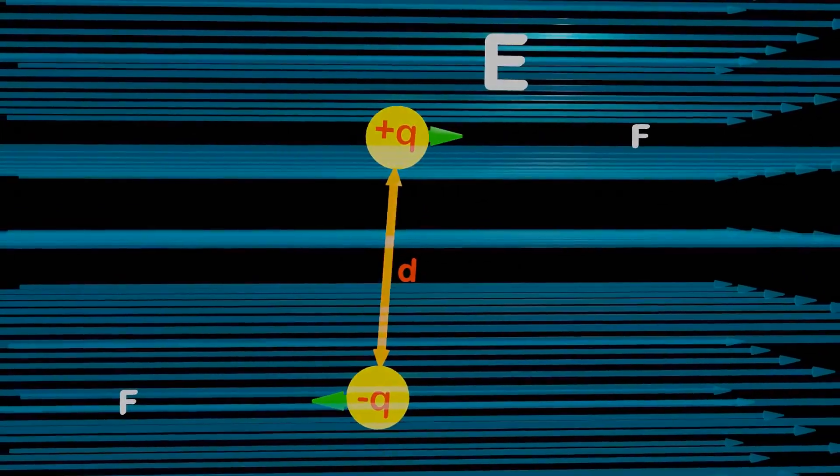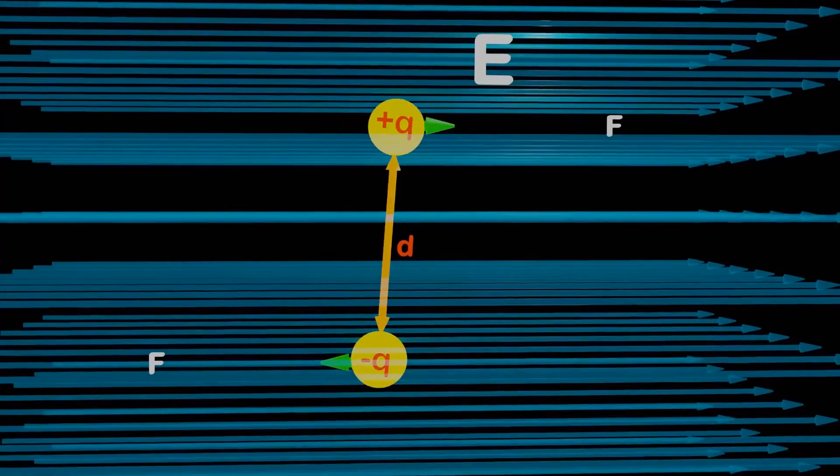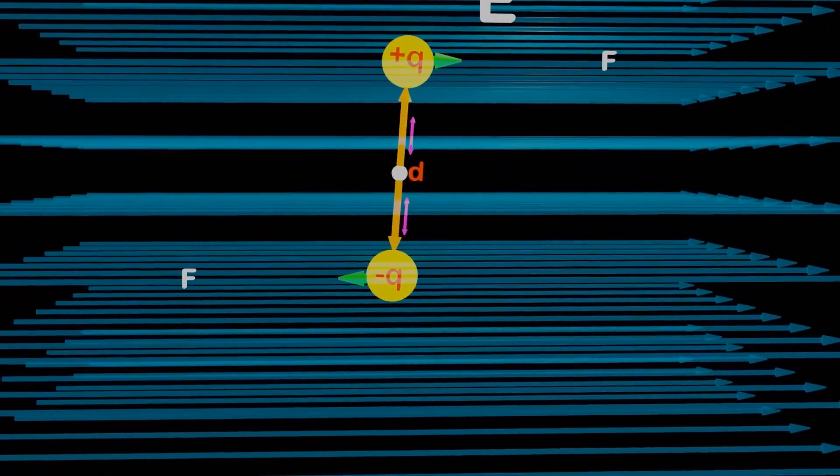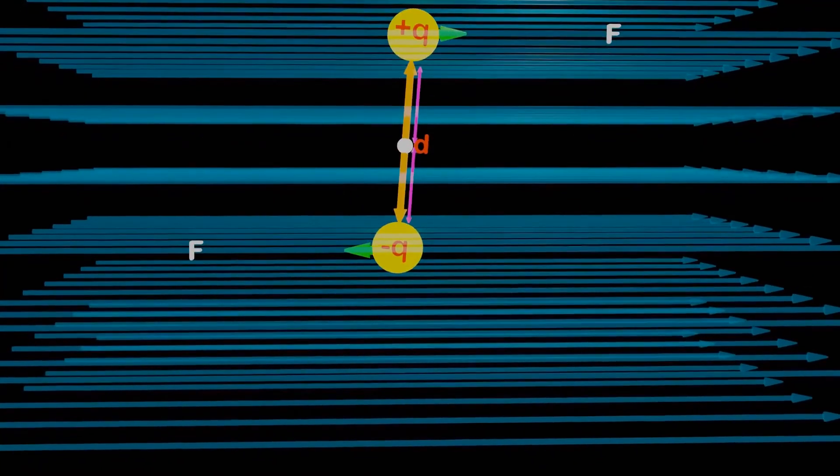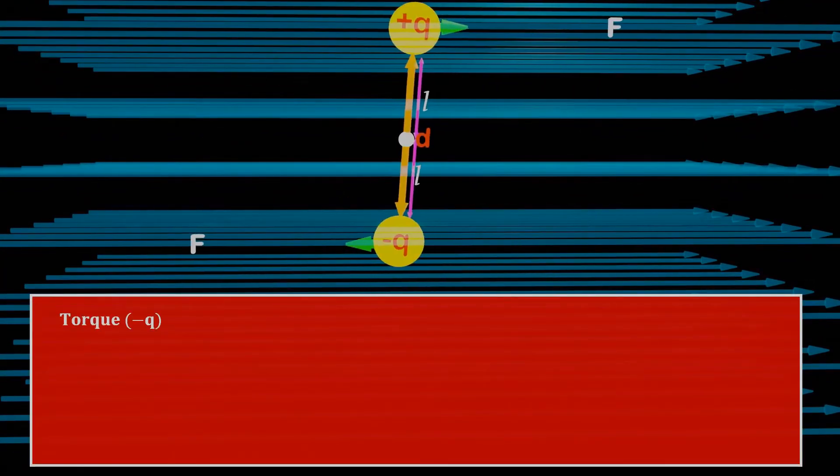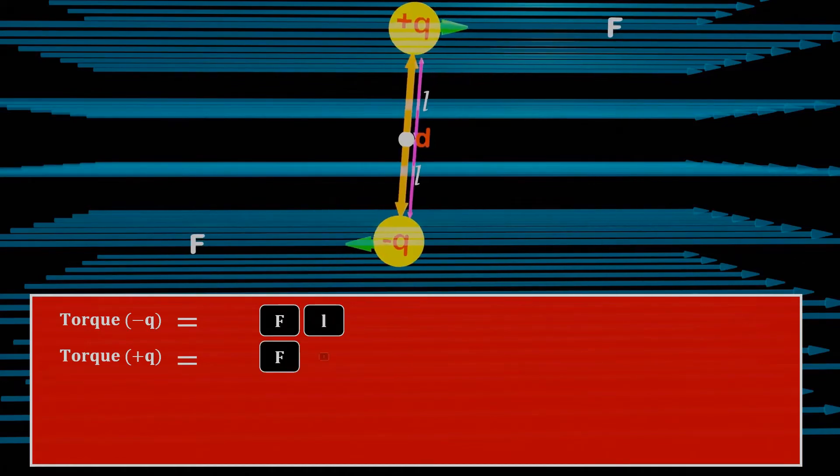This creates a clockwise torque and causes the dipole to rotate about its center of rotation. If the distance between the center of rotation and the two poles of the dipole is L, then the torque due to the negative pole is given by F multiplied by L. Similarly, the torque due to the positive charge is also F multiplied by L.